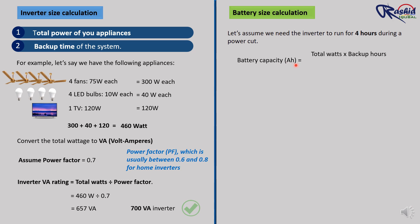Battery capacity (Ah) equals total watts multiplied by backup hours, divided by battery voltage multiplied by efficiency. Most home inverters use a 12 volt battery, and we can assume the efficiency is around 0.85 or 85%.